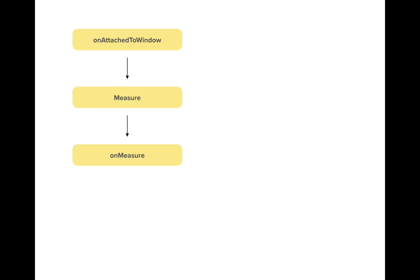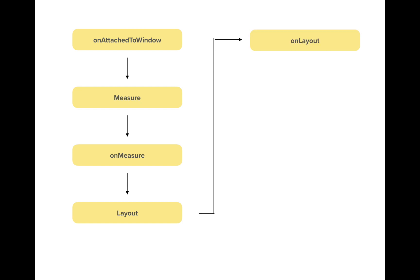Afterwards the call that comes up is layout and onLayout — these two are more or less the same. Before coming to the layout call, your custom view and all its children views already know where they want to get placed and their specifications. Layout and onLayout are both responsible to attach those specifications and measurements to all the views.